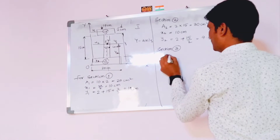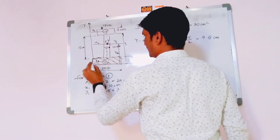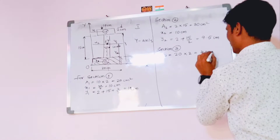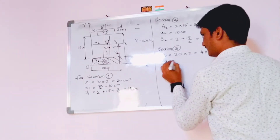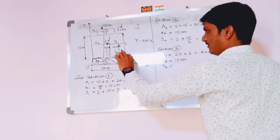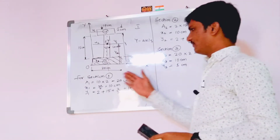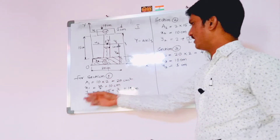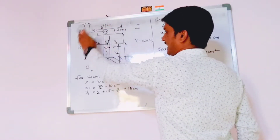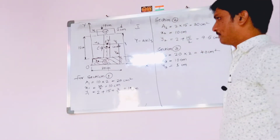For section 3, the area A3 is 20 into 2, which equals 40 centimeter square. The value x3 is again 10 centimeters. For y3, it is half of section 3's height: 2/2 = 1 centimeter. We have now calculated the areas and centroid coordinates — A1, A2, A3 and x1, x2, x3, y1, y2, y3 — for all three sections.